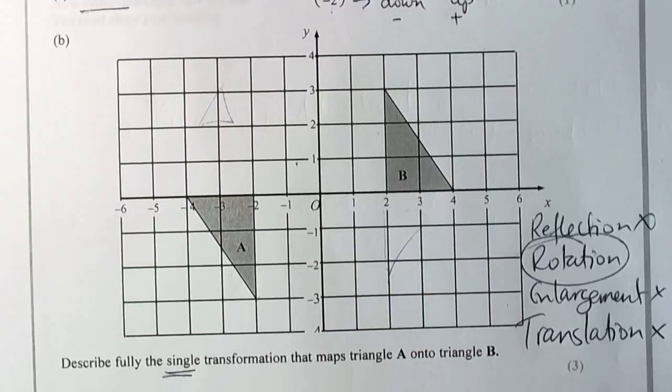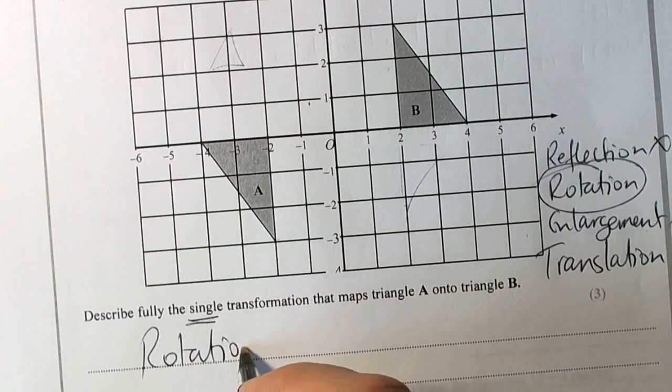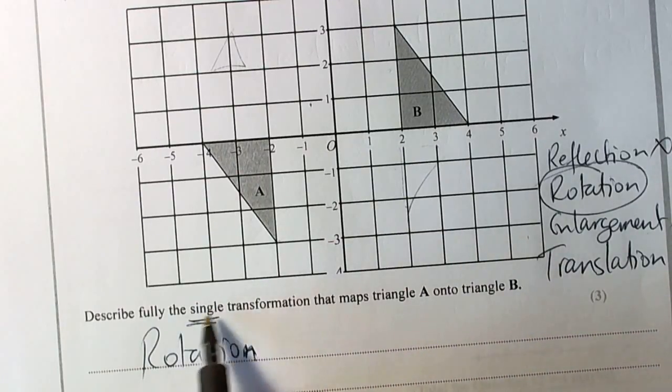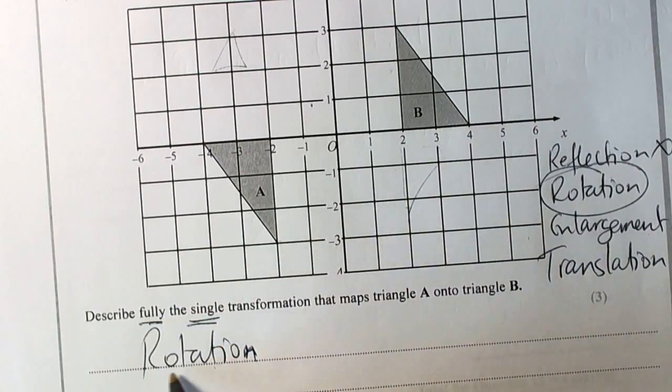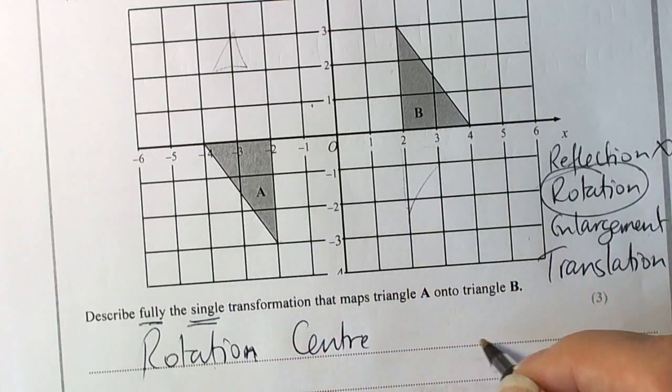So therefore we've come to the conclusion it must be a rotation. So a rotation is the single word we use to get one mark. We've then got to describe fully. So once we know it's a rotation, we've got to give a center, and we've got to give an angle and direction.